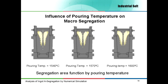To analyze the influence of pouring temperature on A-segregation, I made simulations for 1,540 degrees, 1,570 degrees and 1,600 degrees Celsius. As we can see, the A-segregation area size is lower if the pouring temperature is low. So to minimize the A-segregation, a low pouring temperature is recommended.